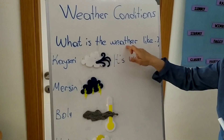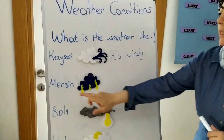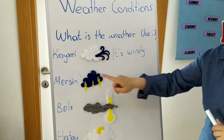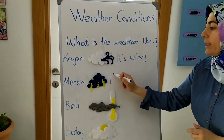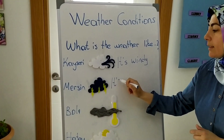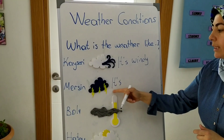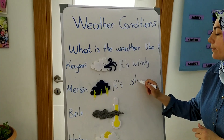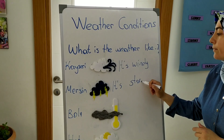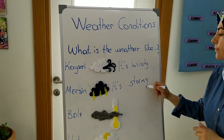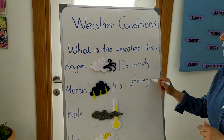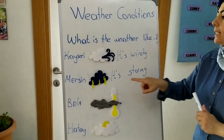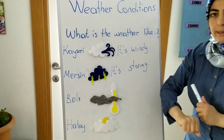What is the weather like in Mersin? Look at the picture. The weather is stormy. It is stormy in Mersin.